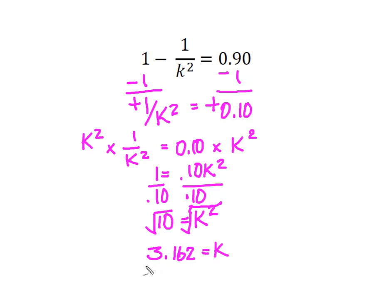In other words, I will have to move 3.162 standard deviations above and below the mean in order to capture 90% of my data, given that I have non-normal distribution.